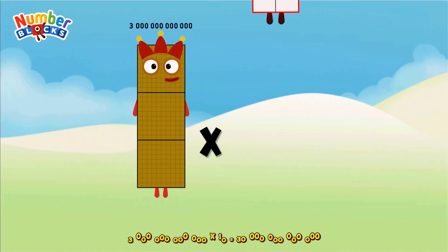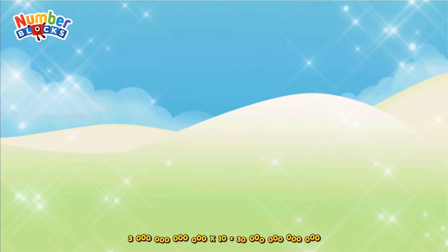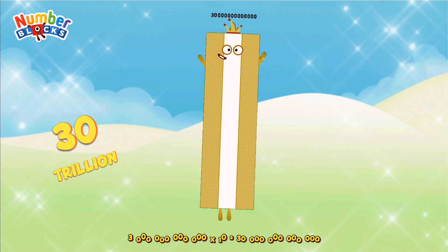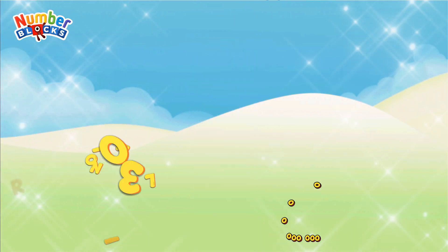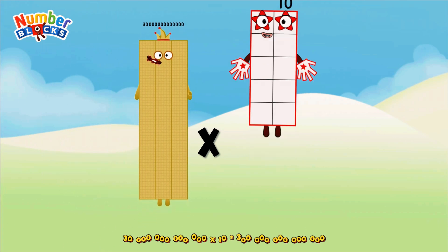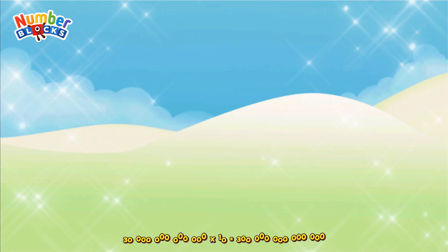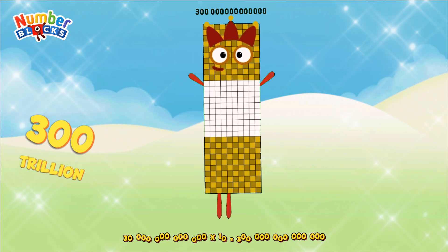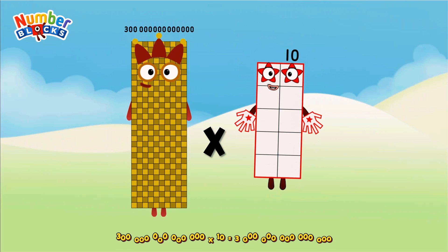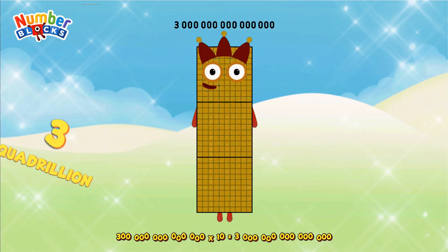3 Trillion multiplicated by 10 equals 30 Trillion. 30 Trillion multiplicated by 10 equals 300 Trillion. 300 Trillion multiplicated by 10 equals 3 Quadrillion.